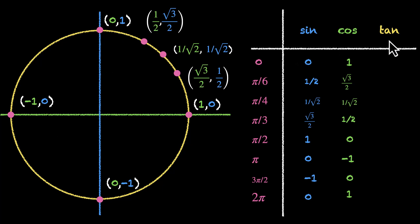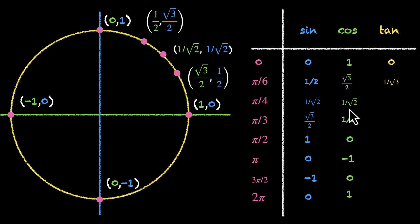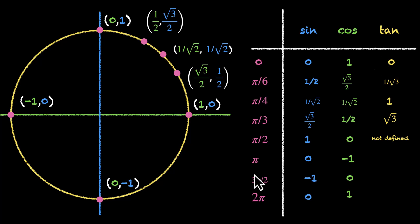We can figure out tan because tan is the ratio of sine and cos. Tan of 0 is 0 by 1, that's 0. Tan pi by 6 is (1/2) divided by (root 3 by 2), that's 1 by root 3. Tan pi by 4 is (1 by root 2) divided by (1 by root 2), that's 1. Tan pi by 3 is (root 3 by 2) divided by 1/2, that's root 3. Tan pi by 2 is 1 by 0 — nothing can be divided by 0, so this is not defined. Tan of pi is 0 by minus 1, that's 0. Tan 3 pi by 2 is minus 1 by 0 — again, not defined. And finally, tan 2 pi is 0 by 1, that's 0. So using this unit circle, we have the sine, cos, and tan of some common angles.